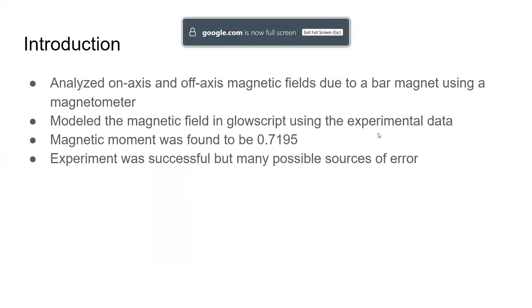I kind of introduced this lab, so analyzing on-axis and off-axis magnetic fields due to a bar magnet using a magnetometer on a phone, and then modeling that magnetic field in GlowScript using the experimental data. And so one of the results was the magnetic moment was found to be about 0.7195, and then the experiment was successful, but there were many possible sources of error.